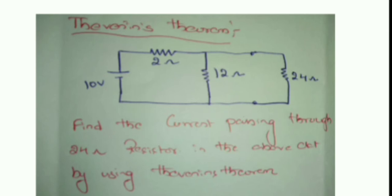By means of one example we will see. In this Thevenin's theorem example, a 10V voltage source is given with a 2-ohm resistor, 2 ohms, 12 ohms, and 24 ohms — where 24 ohms is the load resistor. We need to find the current passing through the 24-ohm resistor in the above circuit using Thevenin's theorem. To find this, the total circuit is converted into one voltage source in series with one resistor — that voltage source is called Thevenin's voltage and the resistance is called Thevenin's resistance.